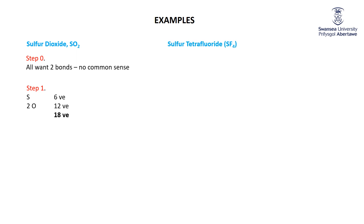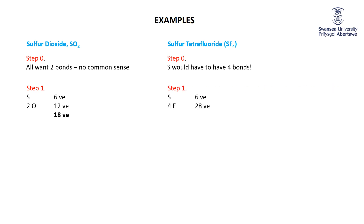And sulfur tetrafluoride, SF₄. Step zero: can't obey common sense — sulfur wants two bonds, but here it's got to have four because fluorine is going to have one bond and no more unless there's absolutely no choice. So: sulfur has six valence electrons; four fluorines at seven each gives 28; 28 plus 6 equals 34 valence electrons.